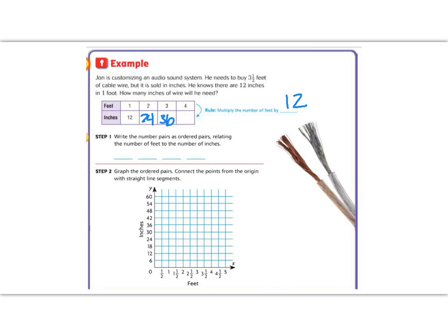Now let's take these numbers and write them into ordered pairs. So our first one is one, twelve. Then we have two, twenty-four. Then we have three, thirty-six. And four, forty-eight.